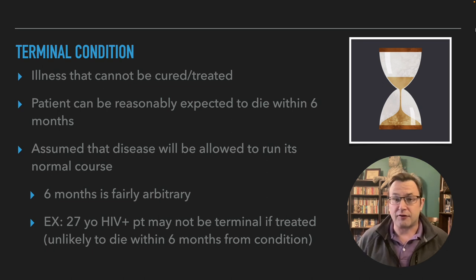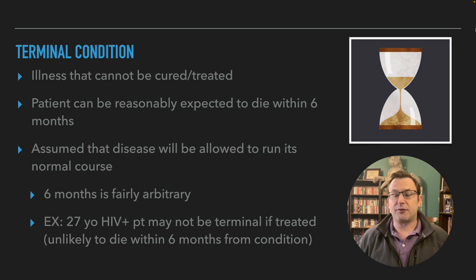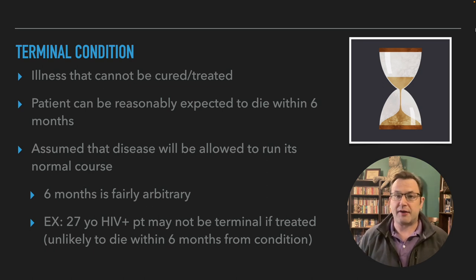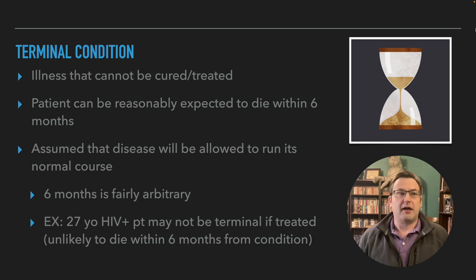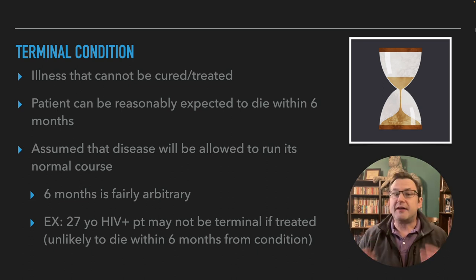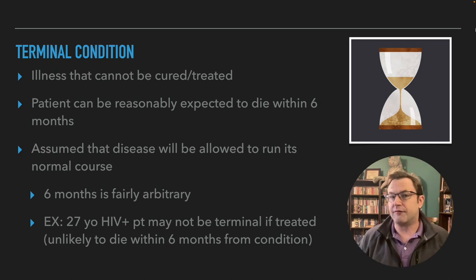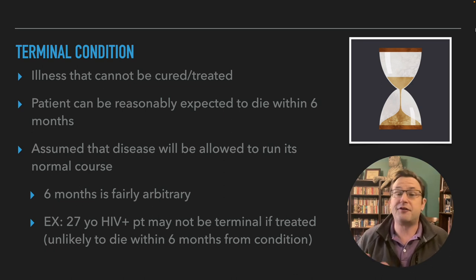The doctor declares a person has a terminal condition and that hospice care is appropriate. In six months, if they have not passed away, the care team will re-evaluate whether hospice care is still appropriate — and frequently it still is, so hospice care is continued and re-evaluated every six months. It is not uncommon for people in geriatric care to live several years with a terminal condition.